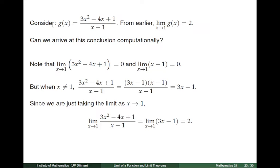Let us again consider the function g that appeared in the first part of the lecture. g of x is given by the expression 3x squared minus 4x plus 1 divided by x minus 1. By considering functional values of g for points x very close to 1, and by looking at the graph of g, we learned that the limit of g of x as x tends to 1 is equal to 2. Now, can we obtain this conclusion computationally?